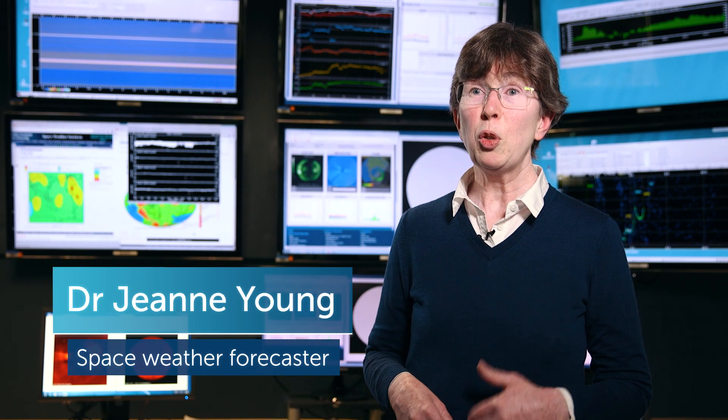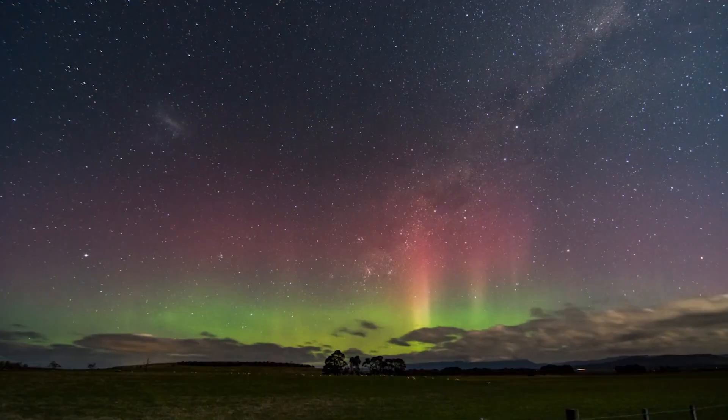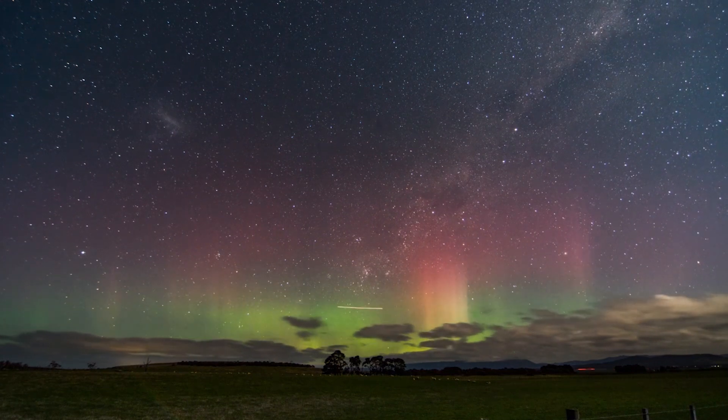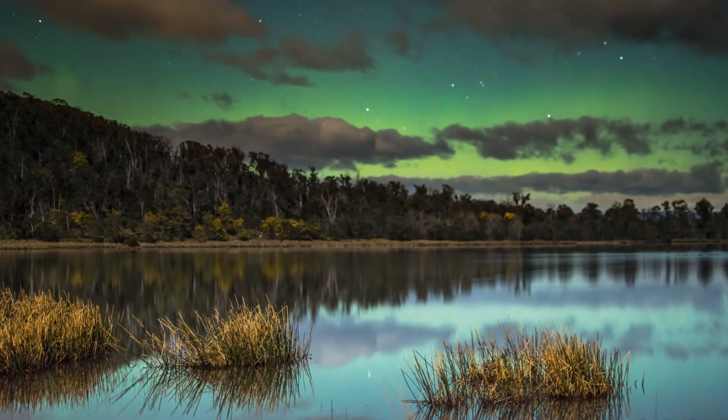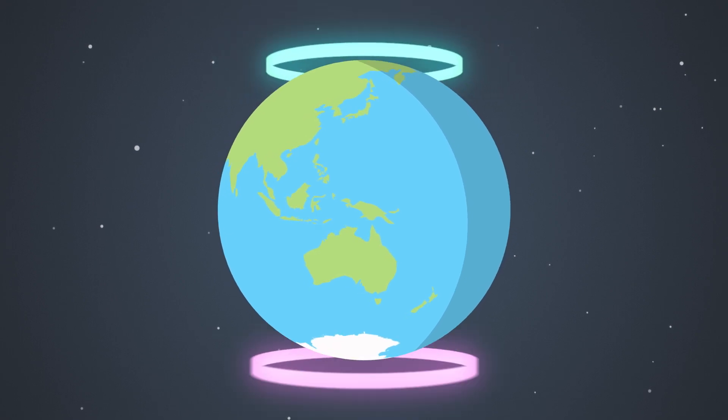An aurora is one of nature's most spectacular visual phenomena, bright lights dancing across the night sky. The brightest auroras are concentrated in rings called the aurora ovals around the north or south poles.